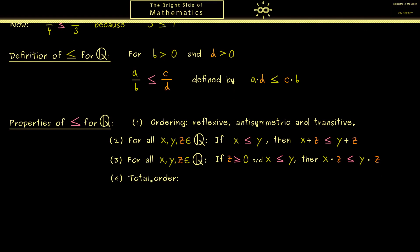Now we have two more properties we really should talk about. First, we have a so-called total order, which means whenever we have two numbers, we can always compare them. So if we have x and y, we should have x is less or equal than y, or y is less or equal than x.